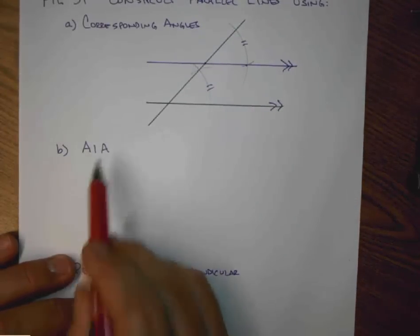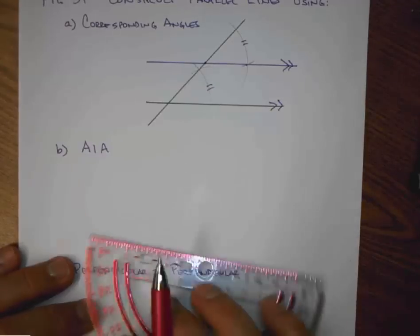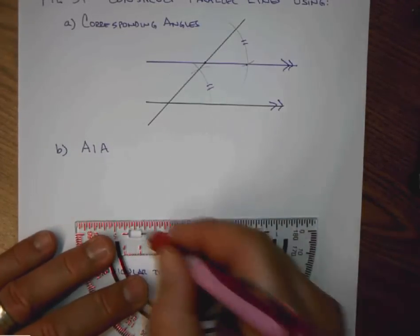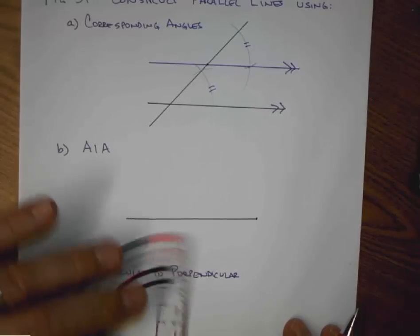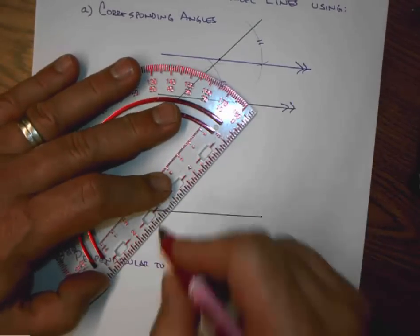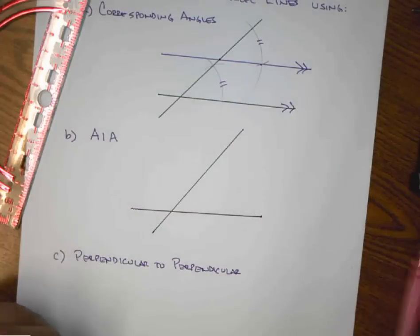Now we'll do the same idea using alternate interior angles. I begin with a line, a segment in this case, because I know I want to produce it parallel to that. I'll create my transversal.